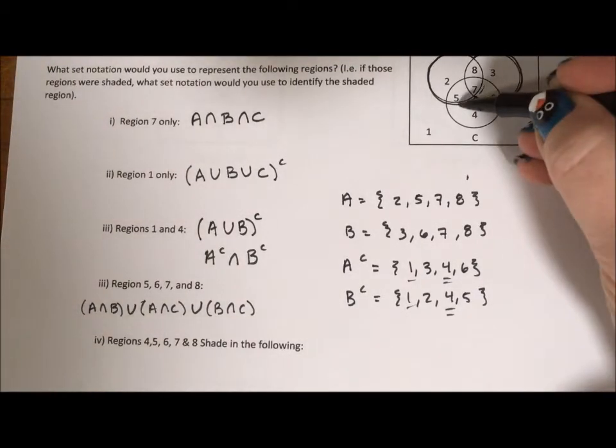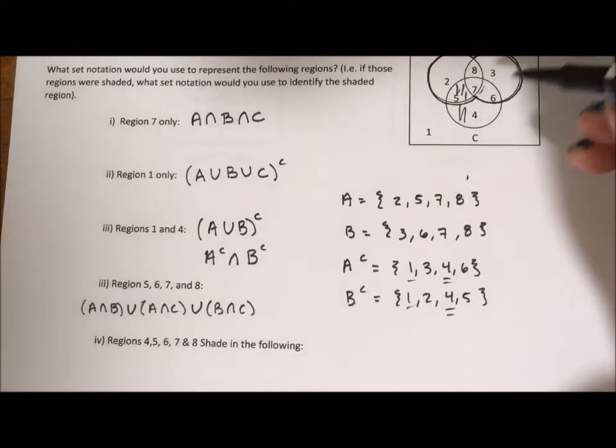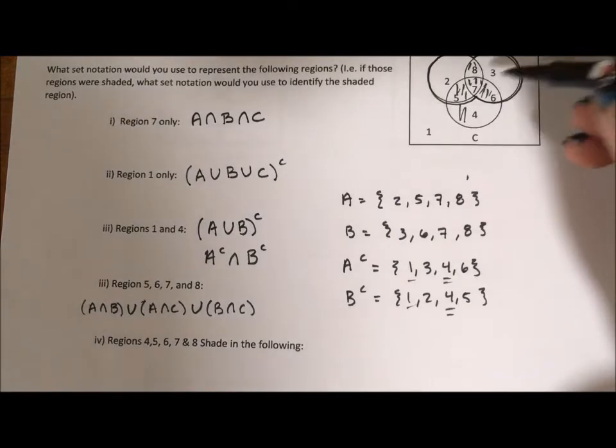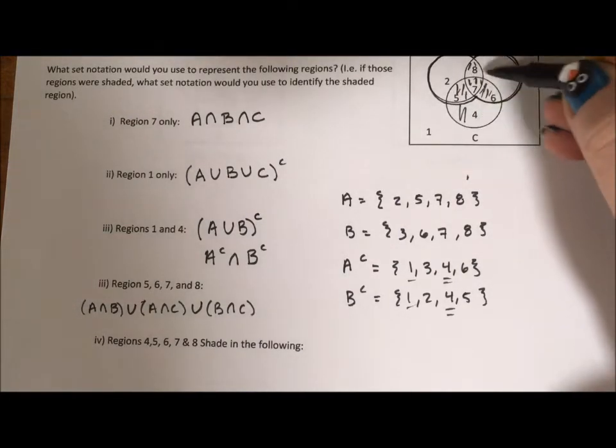So 4, 5, 6, 7, and 8. A circle with a little beak on top. 4, 5, 6, 7, and 8 is C. So I know I want all of C.